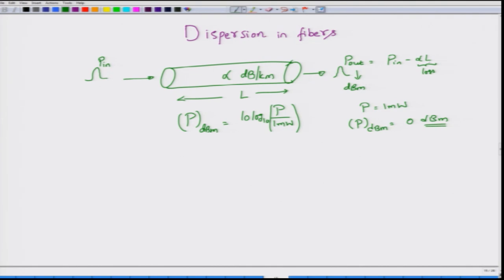The quantity alpha·L has units of dB, whereas P_in has units of dBm. One can also take into account the gain of a system by adding the gain in decibels to the power expressed in dBm. If instead of loss we had an amplifier with gain g dB per kilometer over length L, the total gain would be g·L in dB, which can be added directly to the power in dBm. This is the key advantage of using dBm or decibel units.